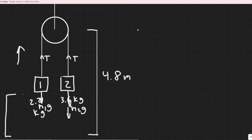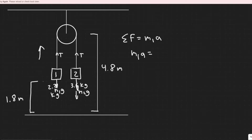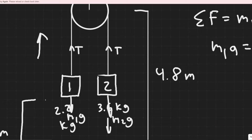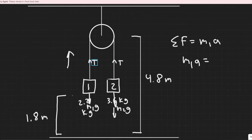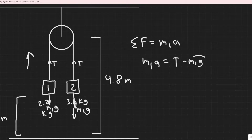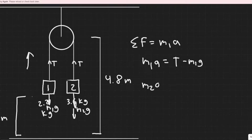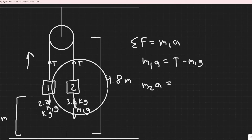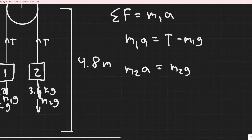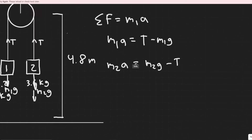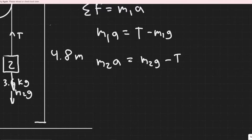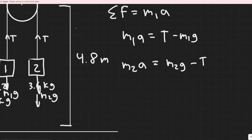Starting with block 1: M1·A equals the sum of the forces. The convention is positive in the direction of travel. Tension is upward, the direction mass 1 travels, so it's positive; M1G is opposite, so it's negative. That gives us M1·A = T − M1G. For the other block, M2 travels downward, so M2G is positive and T is negative: M2·A = M2G − T. Now we can solve for T from the first equation and substitute into the second to solve for A.